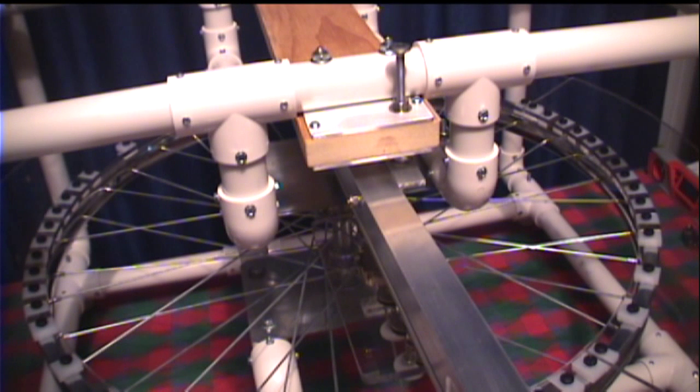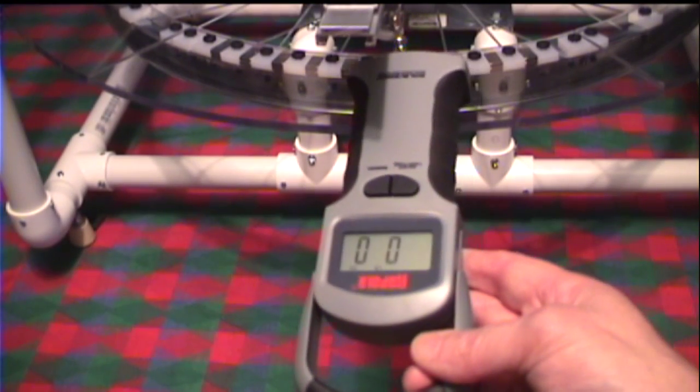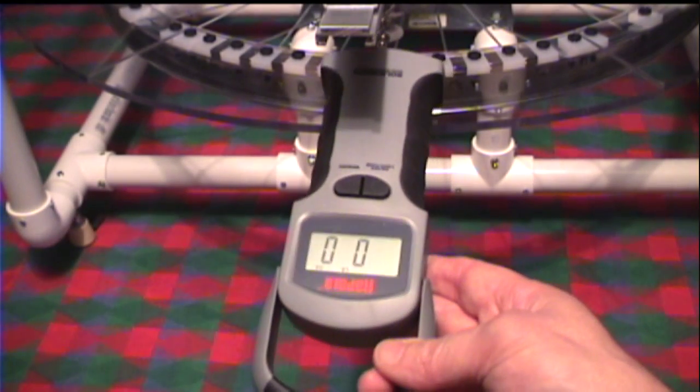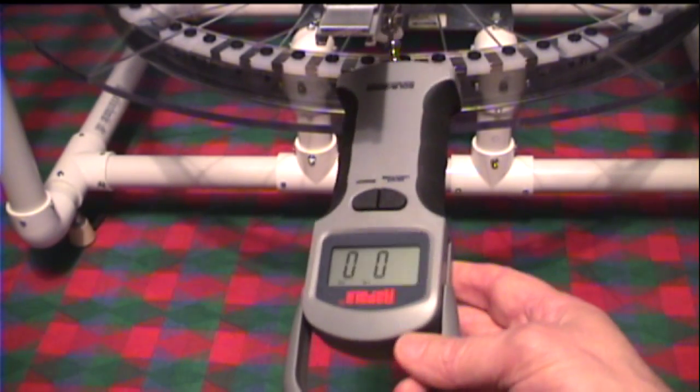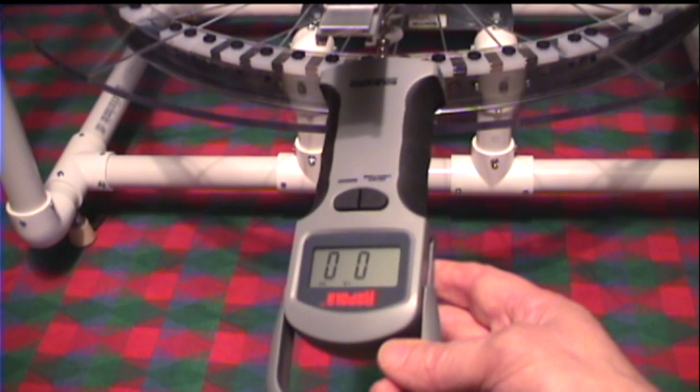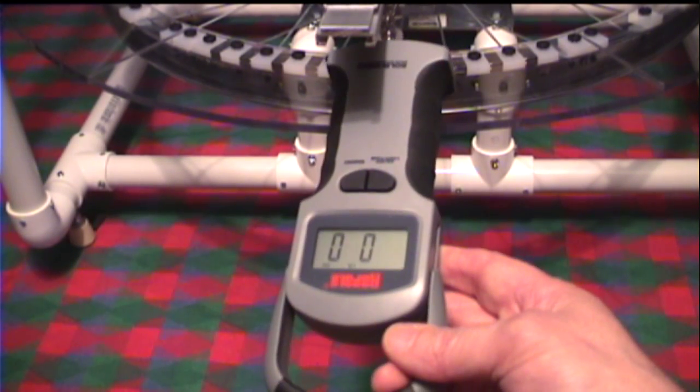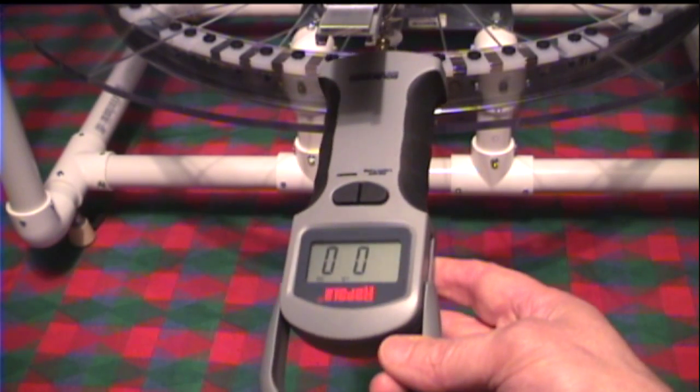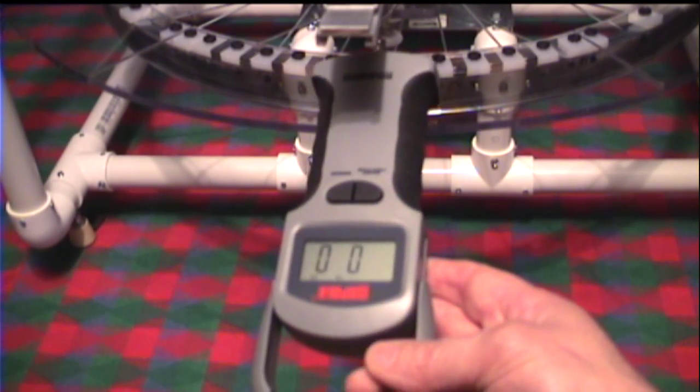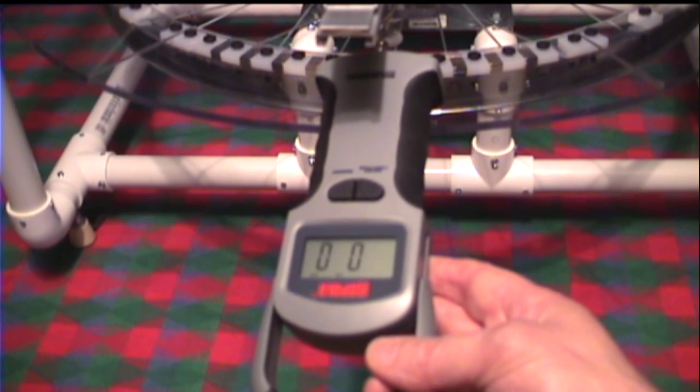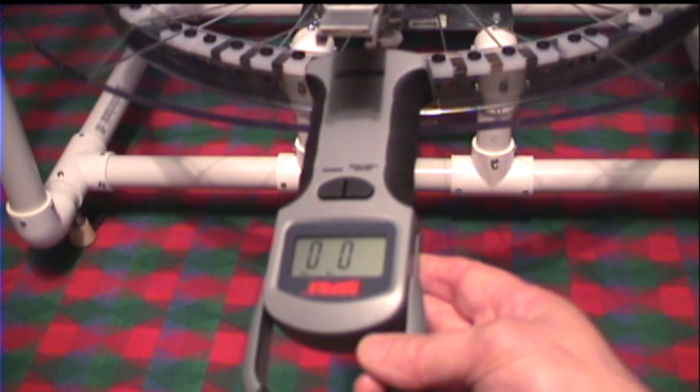But let's just try this test first. I'll show you the pull test showing you the forces that are encountered, or at least that were encountered in the previous experiments, and then we'll move on to the actual track test. Now at this point I'm going to show you something that I think you'll find quite interesting. I've attached my pull scale which measures in pounds and ounces to the static carriage.